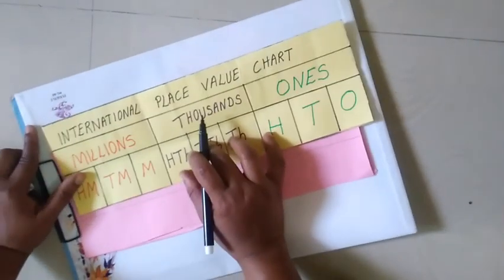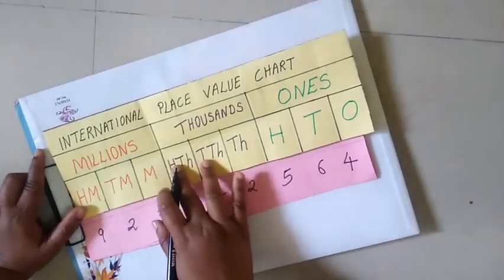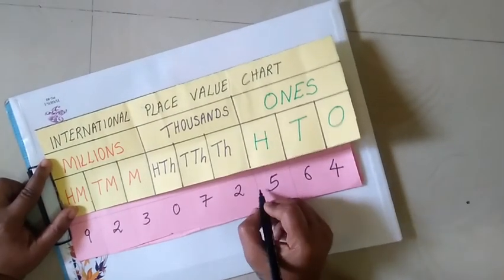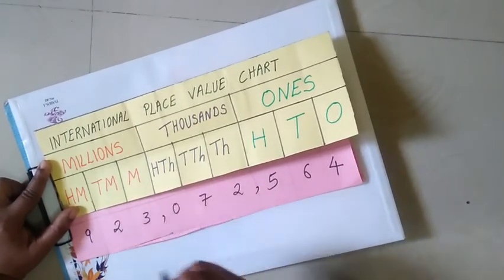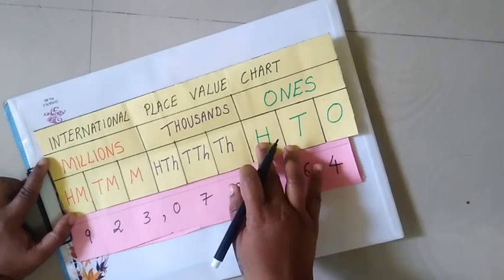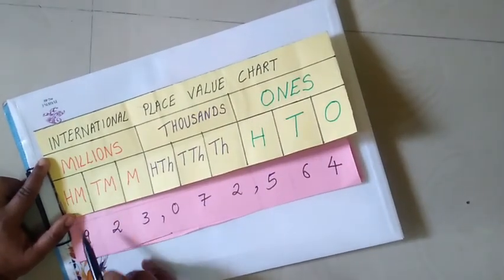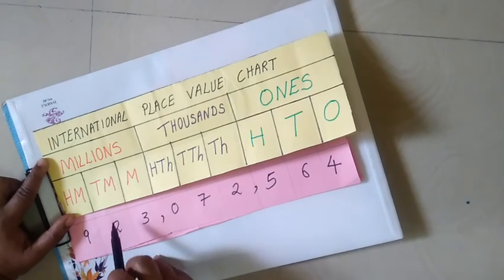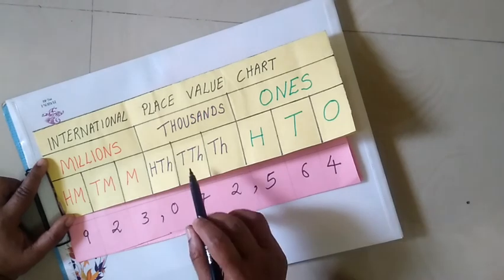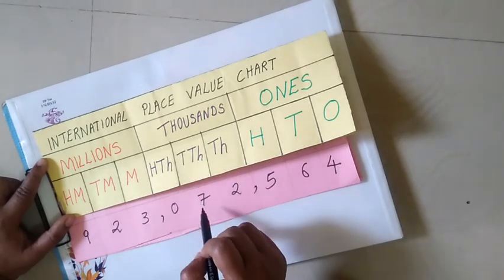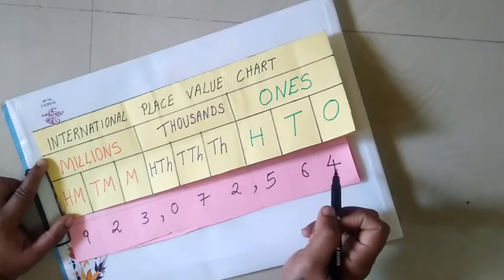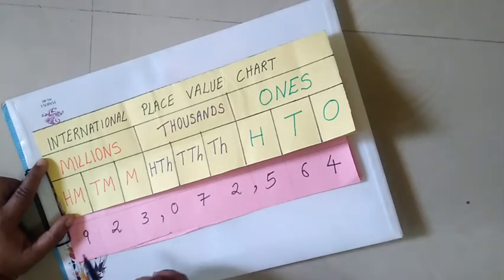Let's take one more example. We have a number and first put commas after three digits, then after three digits again. We read this number — since it begins in the hundred millions — as 923 millions, followed by 72,564, giving us the full number 923,072,564.